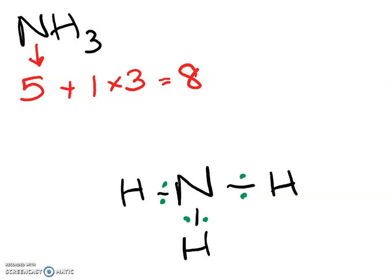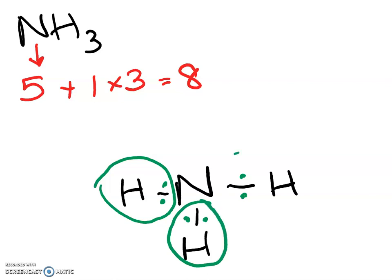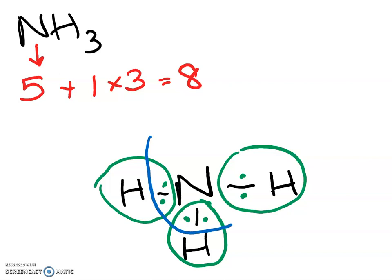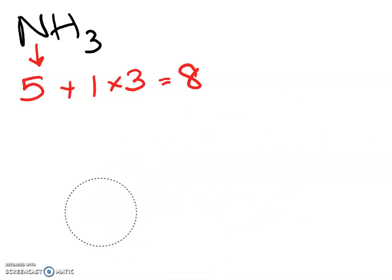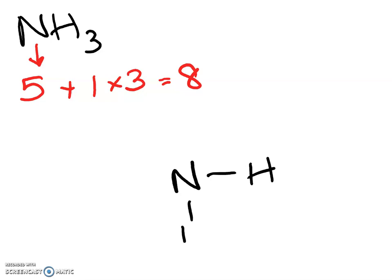Therefore there are two more electrons to assign. Each hydrogen has access to two electrons, which is how many you should have in a hydrogen atom. The nitrogen needs the last two electrons on it so it has access to eight. The Lewis diagram for the ammonia molecule shows that pair of electrons sitting on the nitrogen atom.